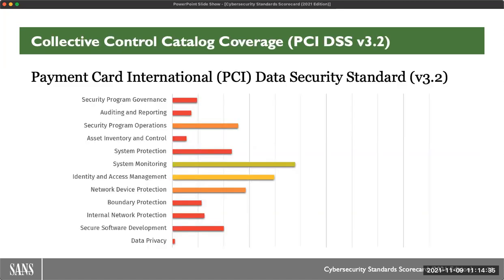We also looked at PCI. You can see this takes more of a bare minimum compliance approach, definitely a little more technically oriented. Since PCI is about things that must be done at a low compliance bar, you'd almost expect the bars to be lower — because it's meant to ensure everyone clears a particular threshold rather than being comprehensive. So it's not surprising the numbers are relatively low. Some areas, like asset inventory, are a little surprising in how low they score.